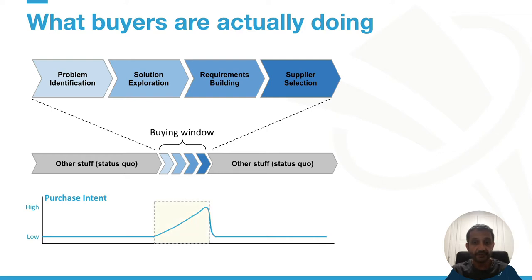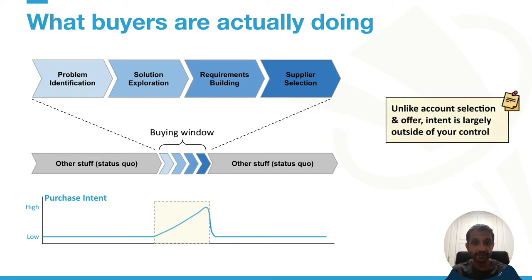This doesn't mean you completely ignore accounts outside of the buying window, but it does suggest you're more likely to see buying motions within it when they have higher purchase intent. An important point here is that unlike account selection, campaigns, and offers, purchase intent is largely outside of your control. It starts when buyers become aware of a problem or solution and progresses from there. So your goal is to engage them in a conversation as early in that process as possible.